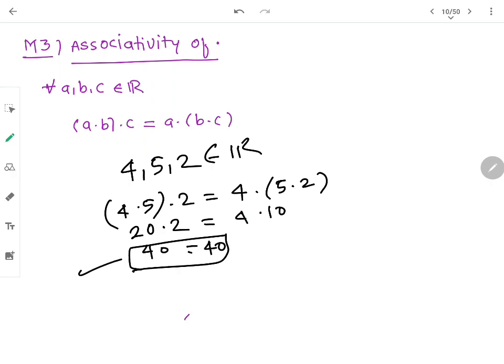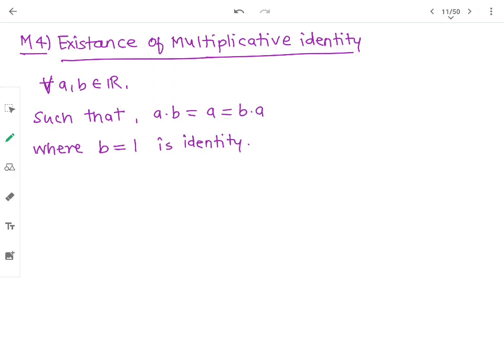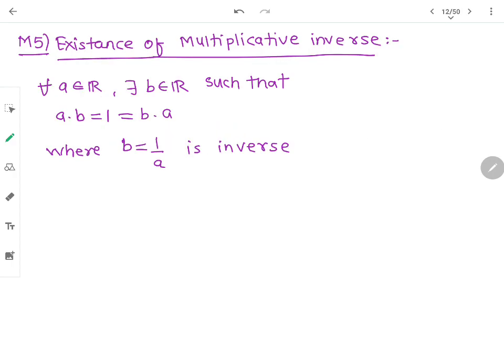Next is existence of multiplicative identity. a into something is again a. So a into 1 equals a. Therefore the identity value is 1.